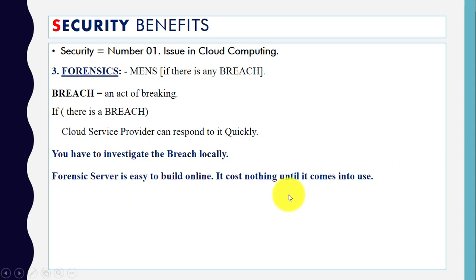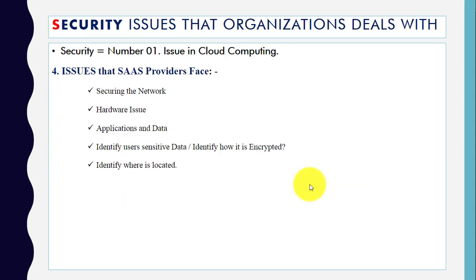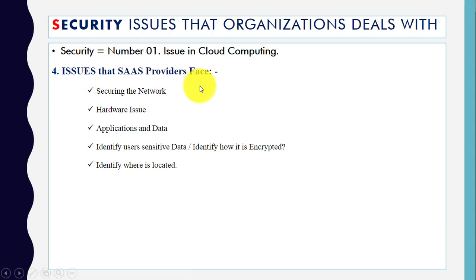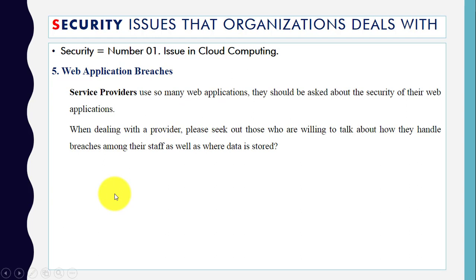Next are the security issues that Software as a Service (SaaS) providers face. As we are providing software as a service to end users, we need a secure network, secure hardware, and secure applications. User sensitive data should be protected — it should be encrypted. We need to identify where the data is located. These are some of the key issues SaaS providers face.